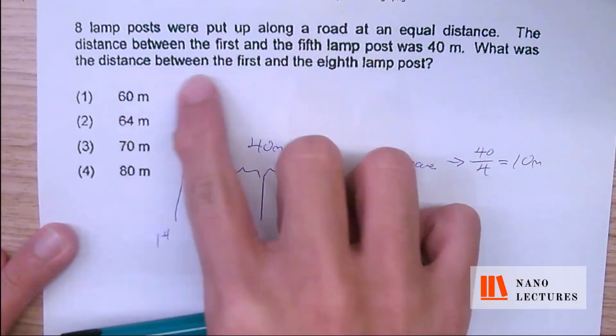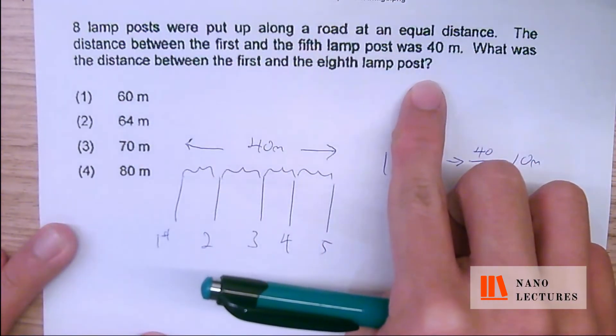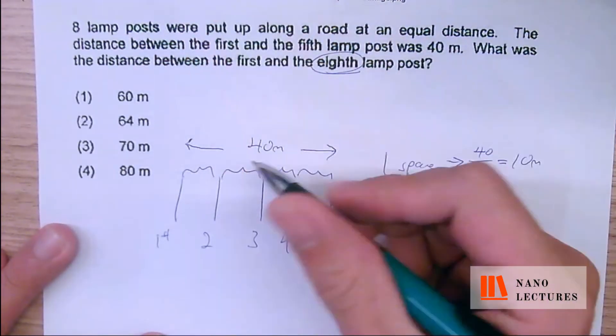Now they're asking what's the distance between the 1st and the 8th lampposts. The 1st and the 8th - how many spaces are there in between? Always take the total minus 1, and then you'll get 7. How do you get 7?